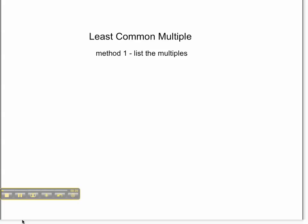The first method is listing the multiples. Let's say we want to find the LCM of 12 and 16. We can list all of the multiples of 12 and 16.